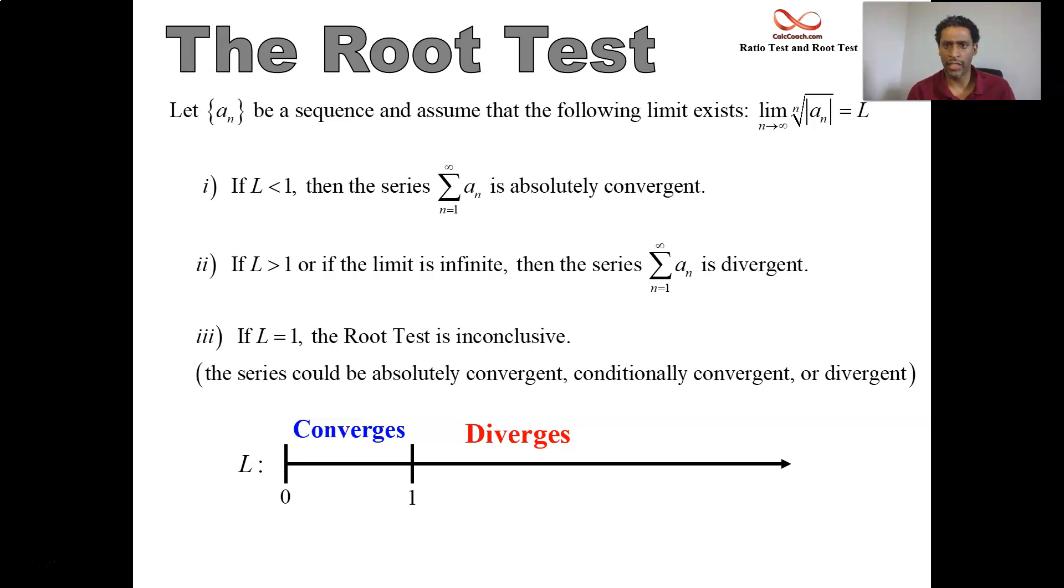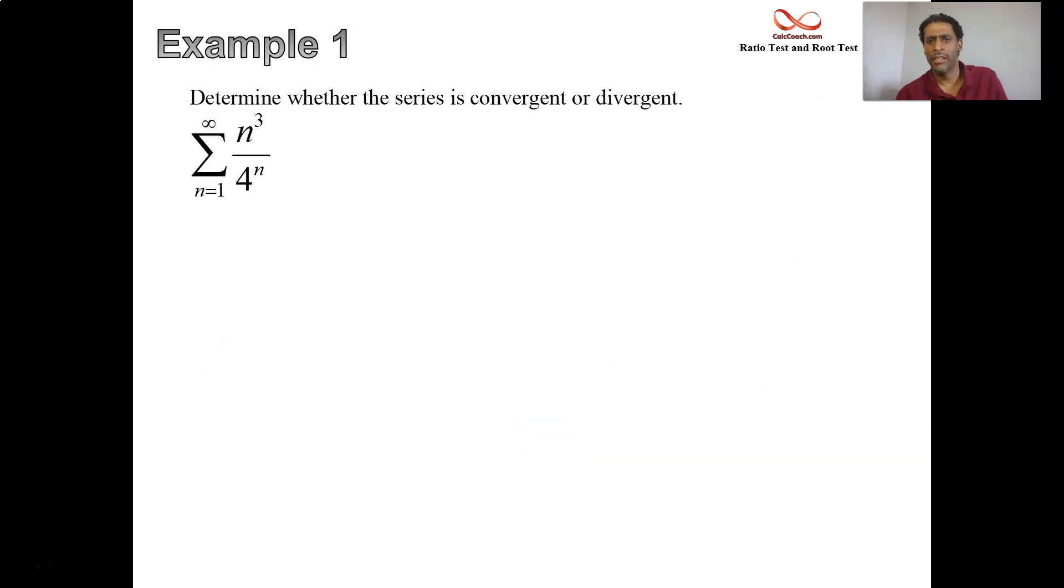In this video, we'll take a look at both in the time that we have left. Example number 1: n cubed on top of 4 to the n. That's your a sub n formula. We're going to execute the ratio test on this one. With the ratio test, we're looking at dividing a sub n plus 1 divided by a sub n.